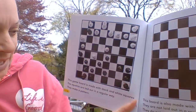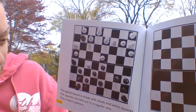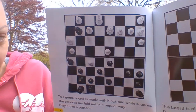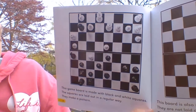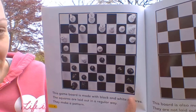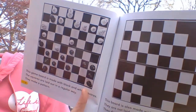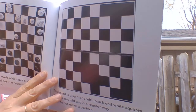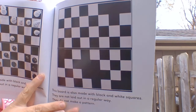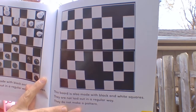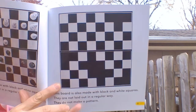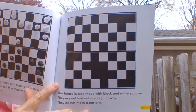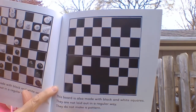This game board is made with black and white squares. The squares are laid out in a regular way — they make a pattern. This board is also made with black and white squares, but they are not laid out in a regular way. They do not make a pattern.